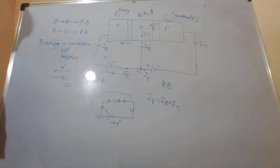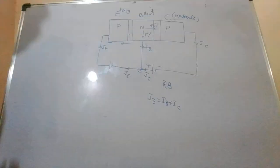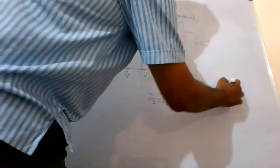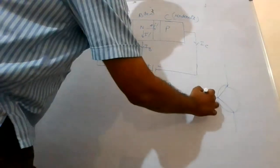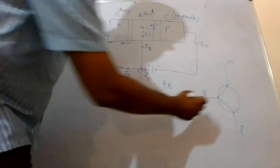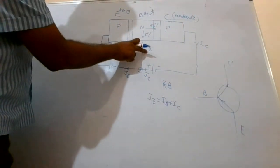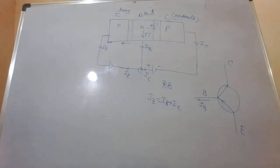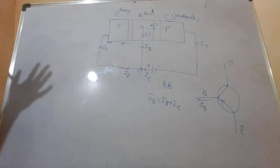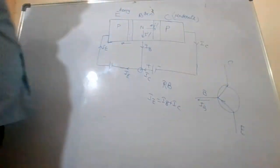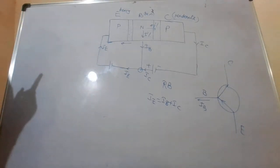Now let's look at the circuit symbol. We draw a circle; this is always the base. This is the emitter and this is the collector. For PNP, the emitter current arrow points towards the junction — into the base. The base current is away from the junction. The arrow pointing toward the base helps you identify this as a PNP type.